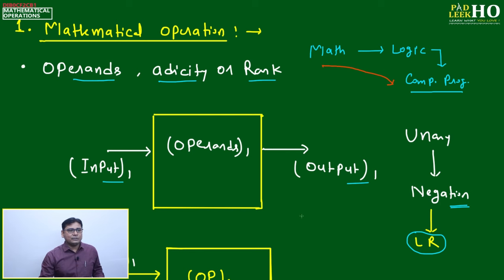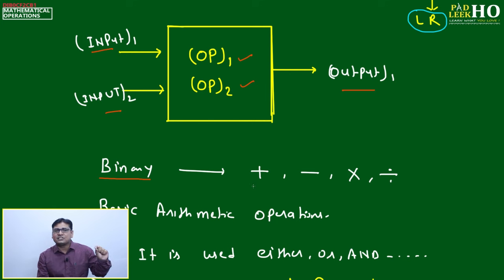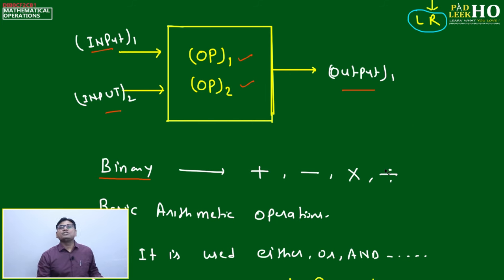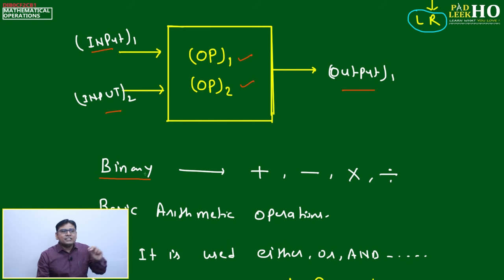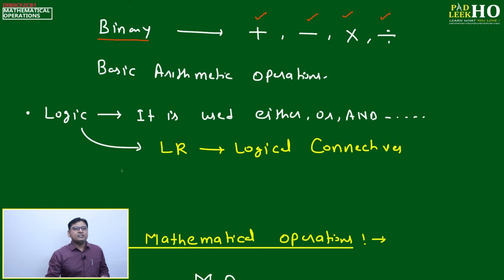If you have two operands — two numbers or two variables — and two inputs with one output, that is called a binary system. Note that this binary mathematical operation system is different from the binary number system where only 0 and 1 are used. Here, binary means two inputs providing one output. Based on binary mathematical operations, the four basic operations are: addition, subtraction, multiplication, and division — these are called basic arithmetic operations.